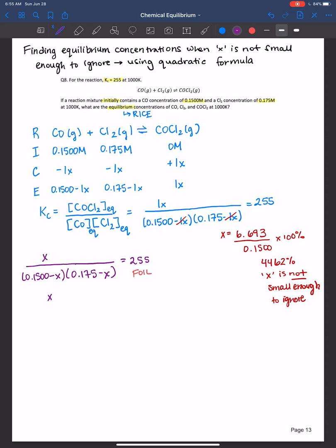So the x over 0.02625 minus 0.100x minus 0.175x plus x squared is equal to 255. So that's after I've done FOIL, I get this equation here. I'm going to continue to simplify as I'm trying to get us into a quadratic formula. And so therefore, I have x over x squared minus 0.325x, so combining like terms, plus 0.02625 is equal to 255.